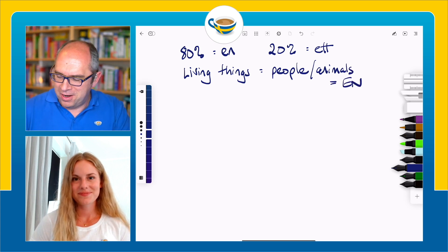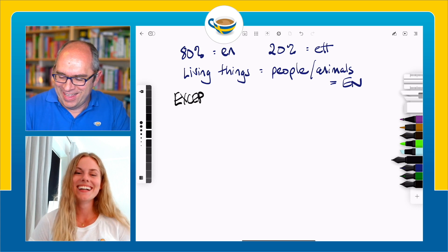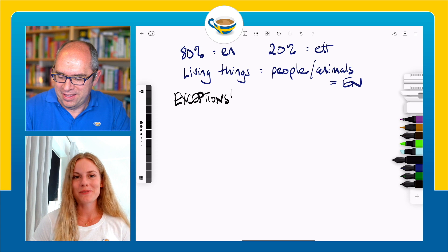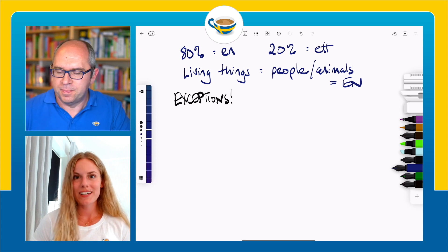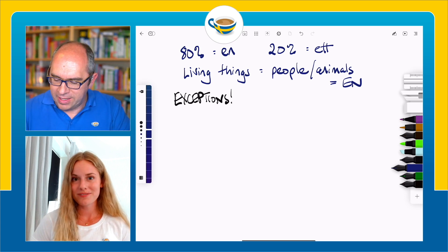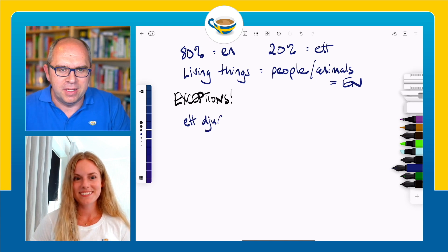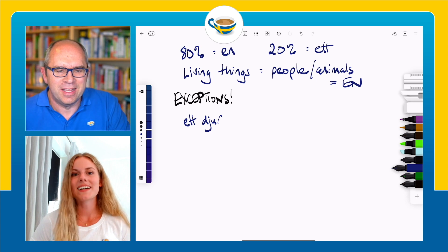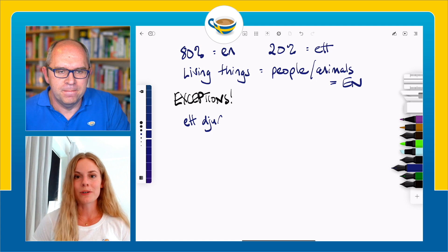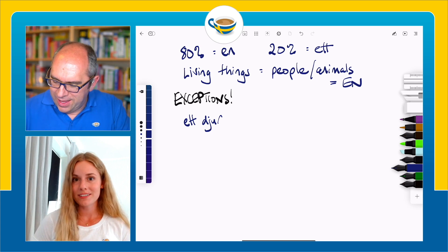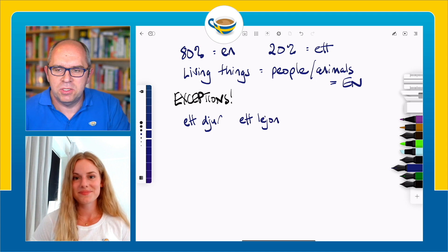But there are exceptions. For example, the word for 'an animal' is ett djur — so ett djur is a living thing but it's still an ett-word. And we also have a specific type of animal: a lion is also an exception — ett lejon.